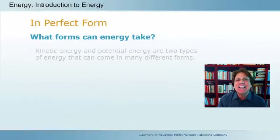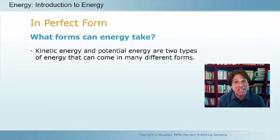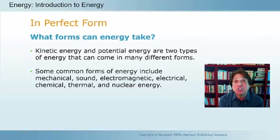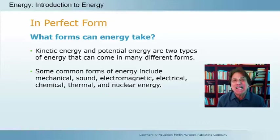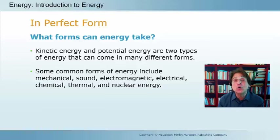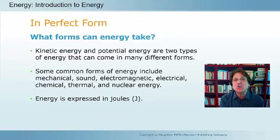What forms can energy take? We have two general types — kinetic energy, the energy of motion, and potential energy, the energy of position or condition. These can be divided into specific types: mechanical energy, sound, electromagnetic energy (light, infrared, radar, visible light), electrical energy, chemical energy, thermal energy, and nuclear energy. Energy is measured in units called joules, represented by a J.